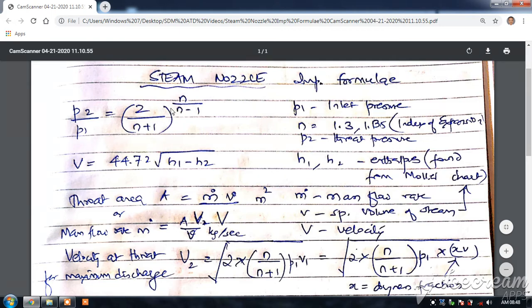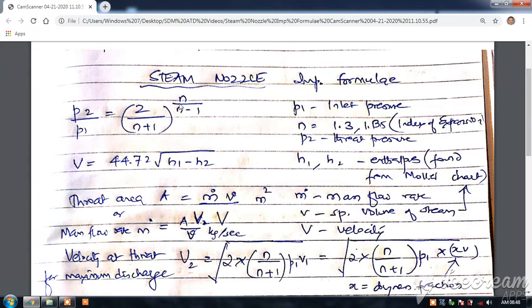So here, n is the expansion index or index of expansion, and the value depends on the type of steam - whether it is superheated steam, dry saturated steam, or wet steam. There are three types of steam and the values change from 1.135 to 1.3.